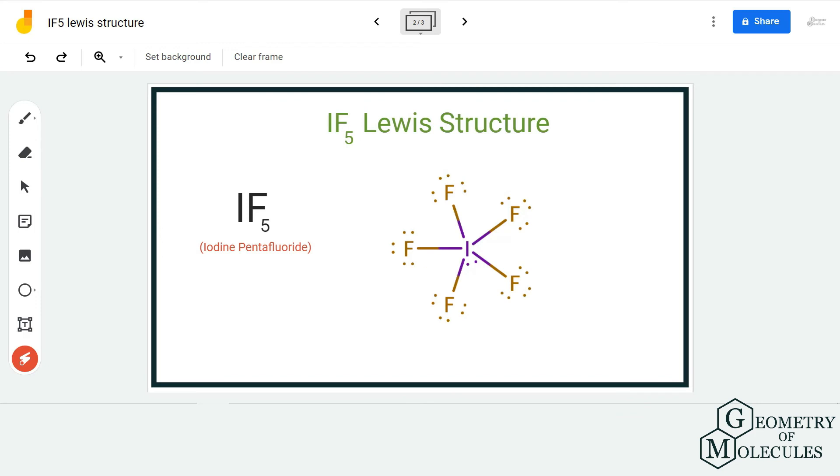If you calculate the formal charges of the atoms in this molecule, you will find that the formal charges of iodine and fluorine atoms are zero, which means this is the correct Lewis structure for IF5 molecule. I hope this video helps you understand that.